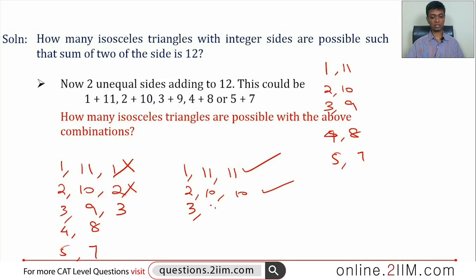3, 9, 3 or 3, 9, 9. 3, 3, 9 is not a triangle because 3 plus 3 is 6, less than 9. 3, 9, 9 is a triangle. 4, 8, 4 or 4, 8, 8. 4, 4, 8 is not a triangle because 4 plus 4 is equal to 8, not greater than 8. Sum of two sides has to be strictly greater than the third side, not even equal to. 4, 8, 8 will of course be a triangle.